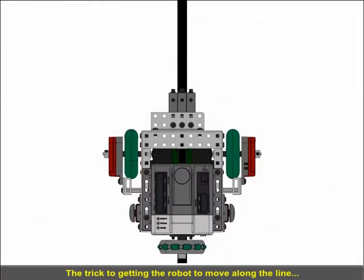The trick to getting the robot to move along the line is to assign the center sensor to stay on black and the outer two sensors to stay on white.